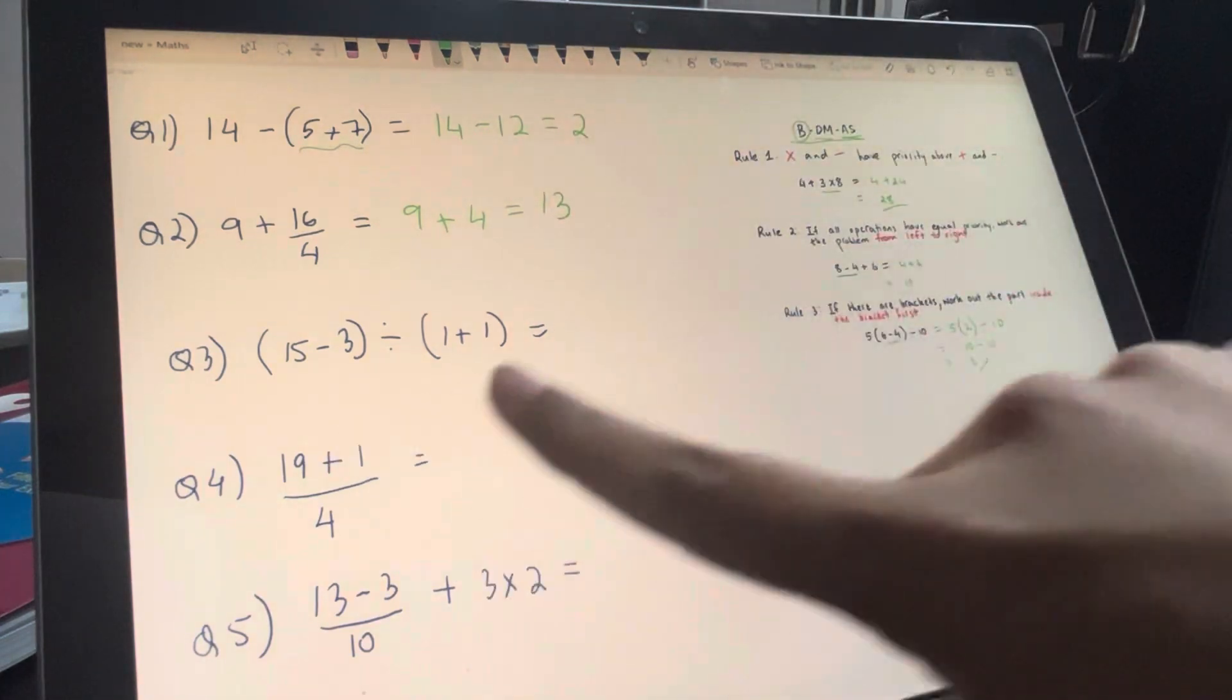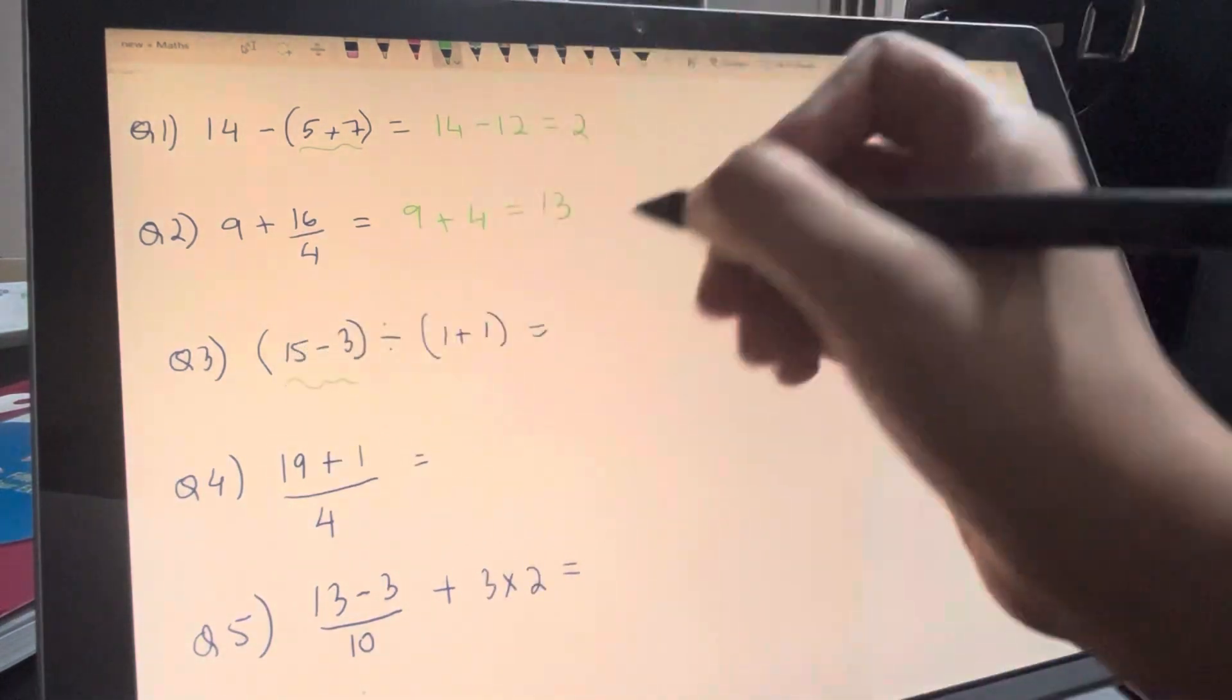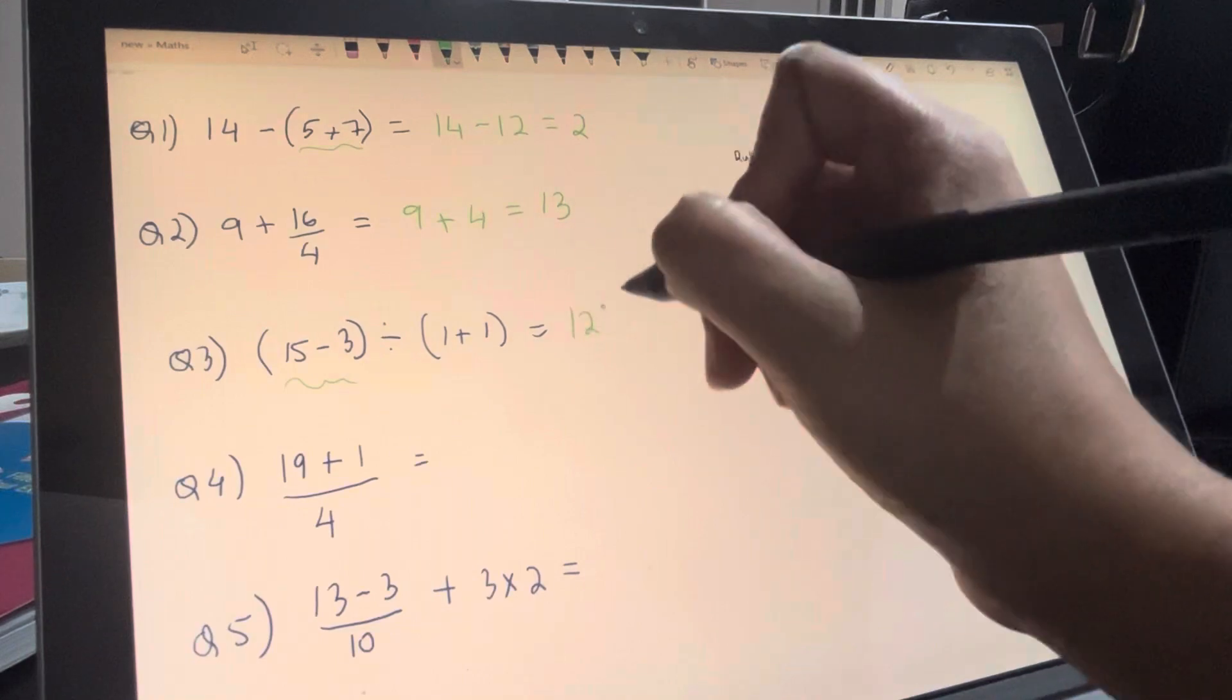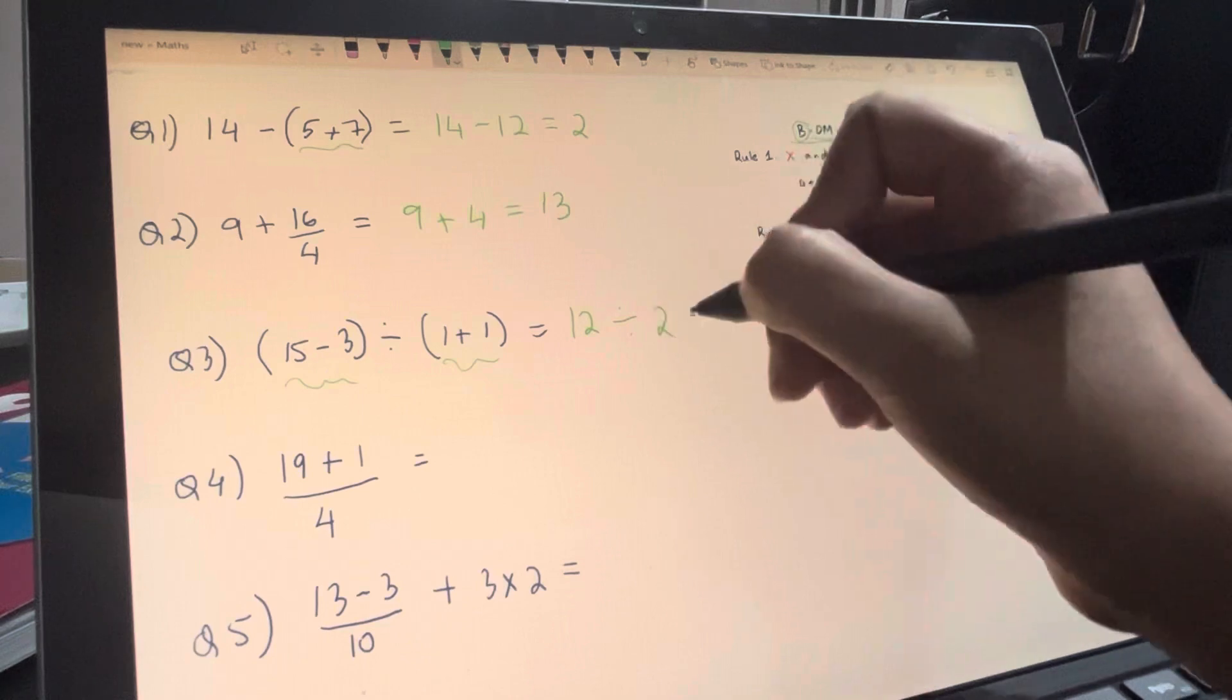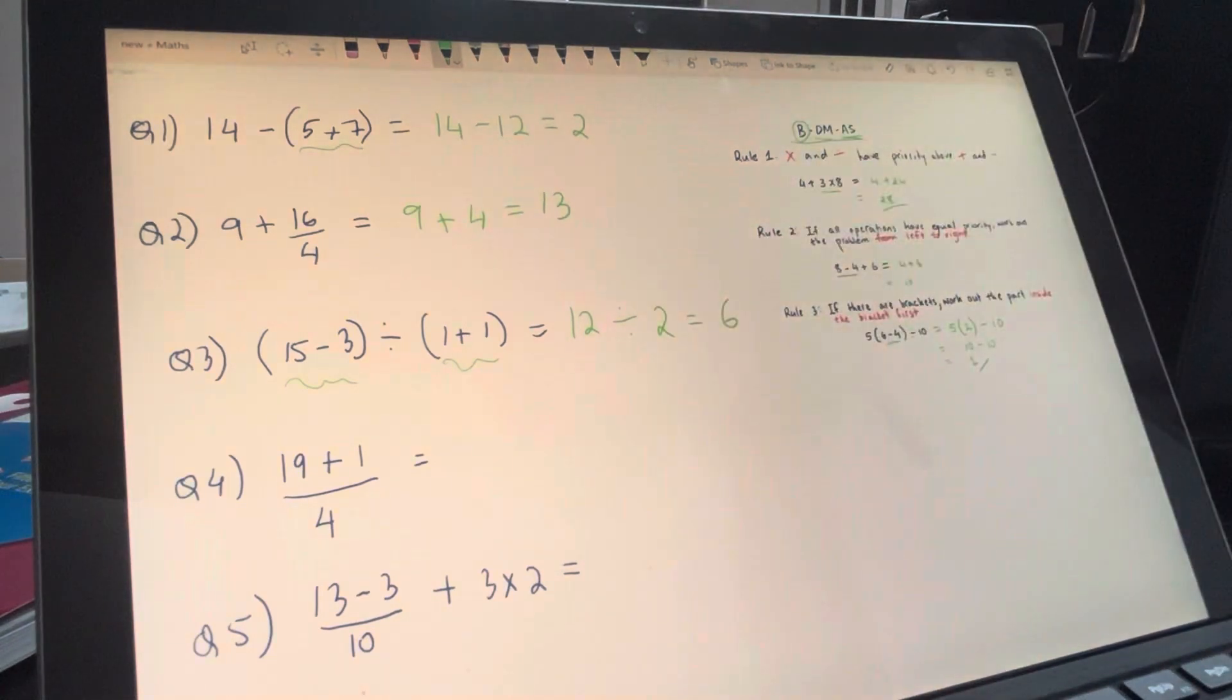Now again, we know that brackets happen first, so this 15 minus 3 is going to become 12, divided by 1 plus 1. Again, we're going to do this bracket first, so that's going to be 2, and 12 divided by 2 is 6.